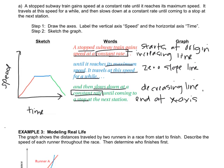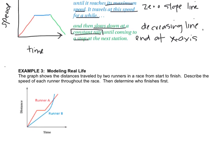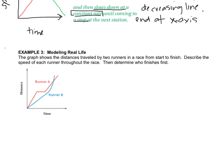Now we're going to look at something where it's not necessarily always a constant rate. The graph shows the distances traveled by two runners in a race from start to finish. Describe the speed of each runner throughout the race, then determine who finishes first. First thing we're going to do is describe the speed of each runner. Runner A, the red line, increases at a constant rate, so the distance is increasing. Then the distance doesn't change at all. If you're running a race and your distance isn't changing, you probably stopped. Take a breath, get a drink of water, whatever.